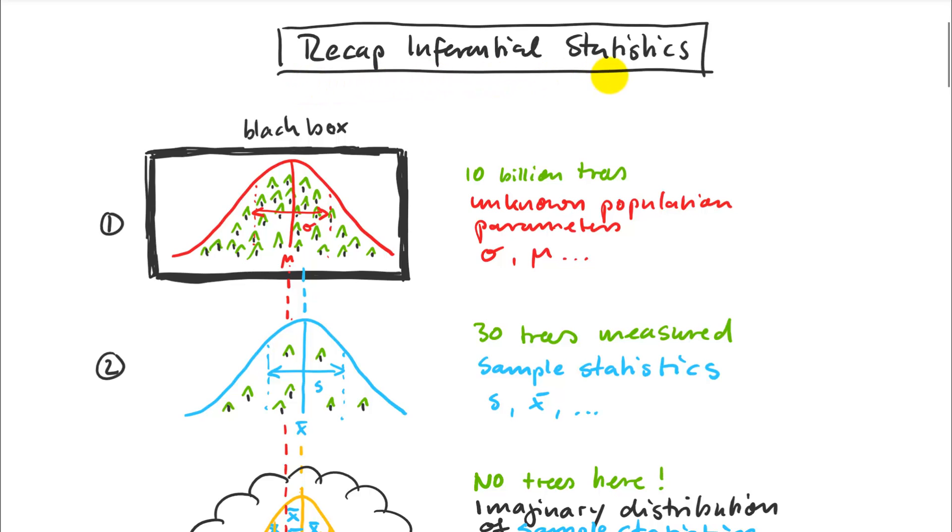Let's start with a recap of inferential statistics. We start with a population, the total number of objects we want to make inferences about. That is usually in a black box. This population has a true mean and a true standard deviation, but we really don't know what that is unless we simulate it in R. In real life, that's not something you'll ever know. Your population may be 10 billion trees in a particular ecoregion. Nobody's going to measure this.